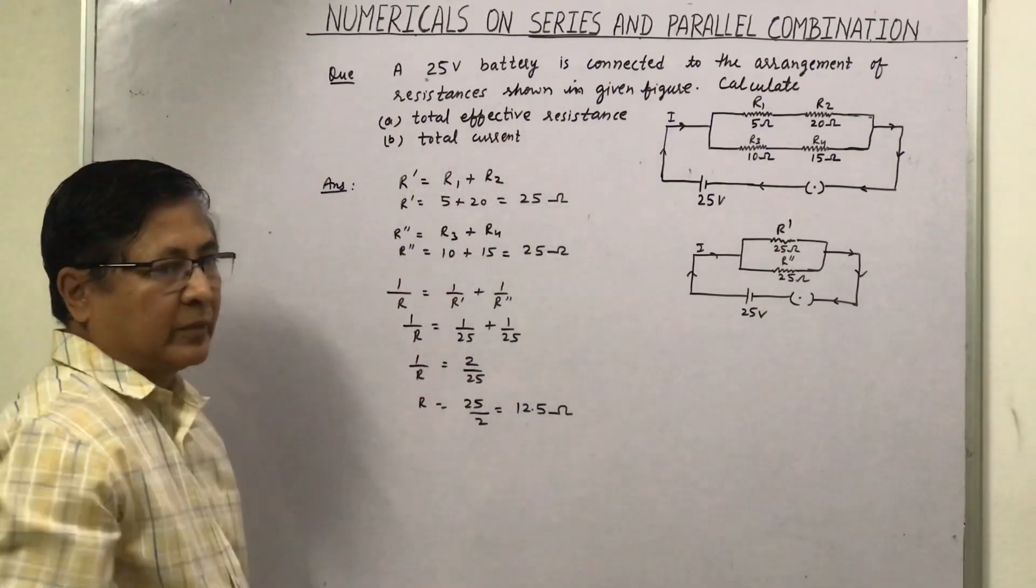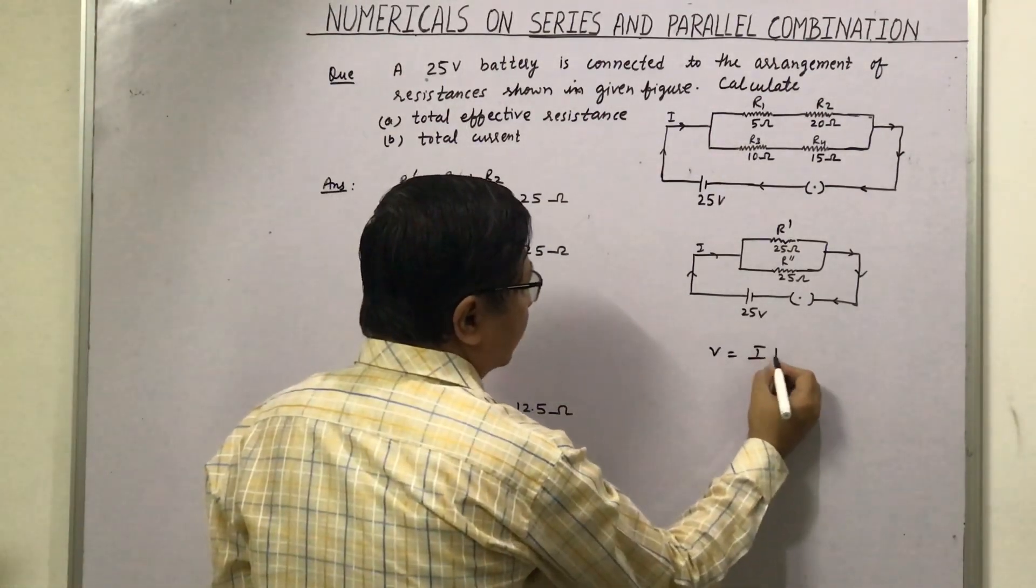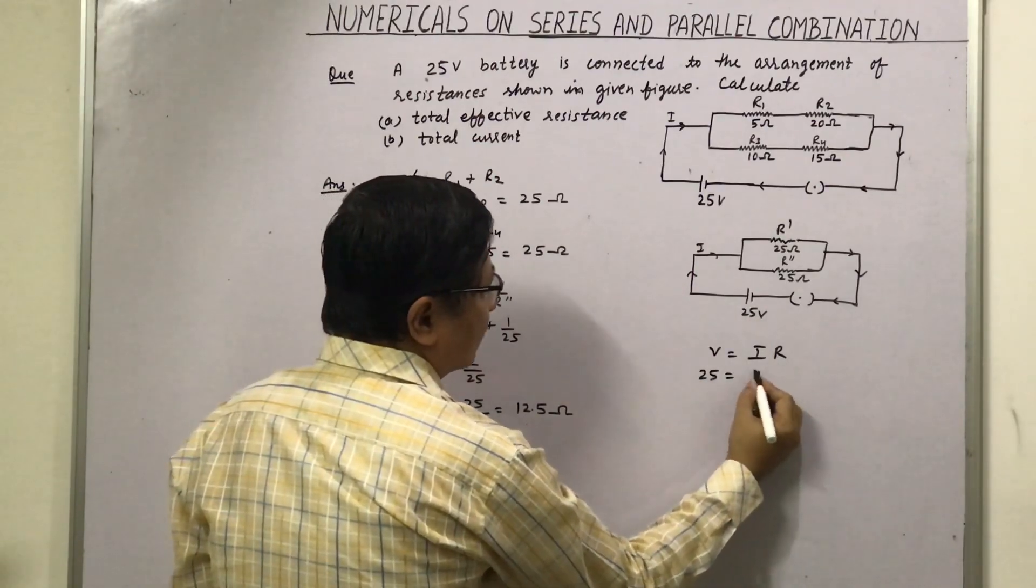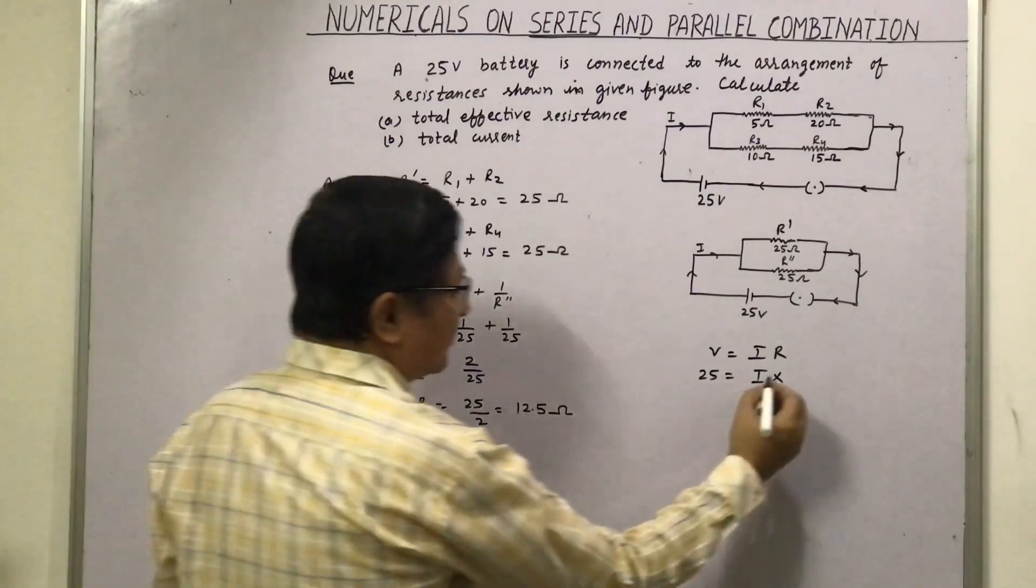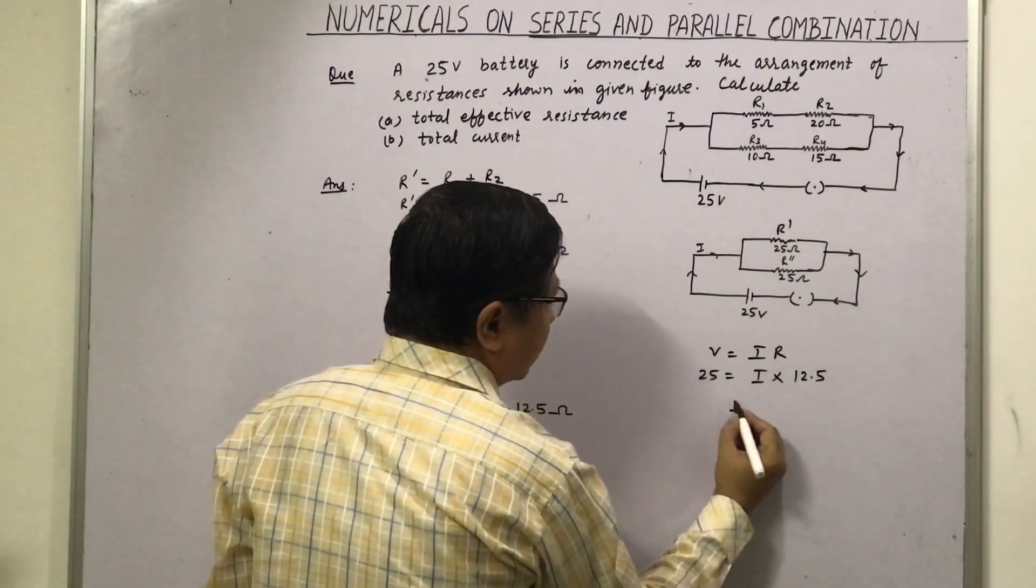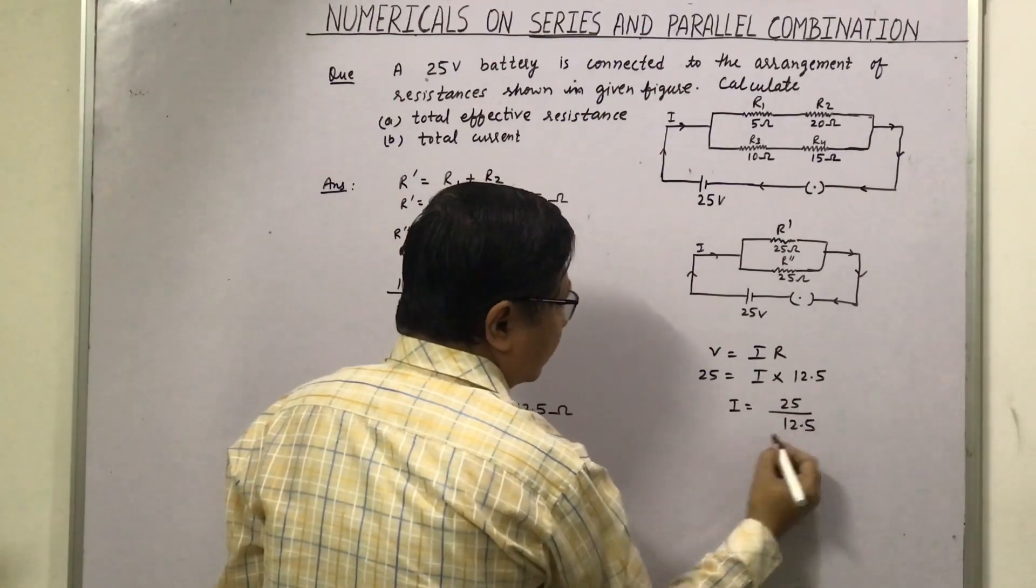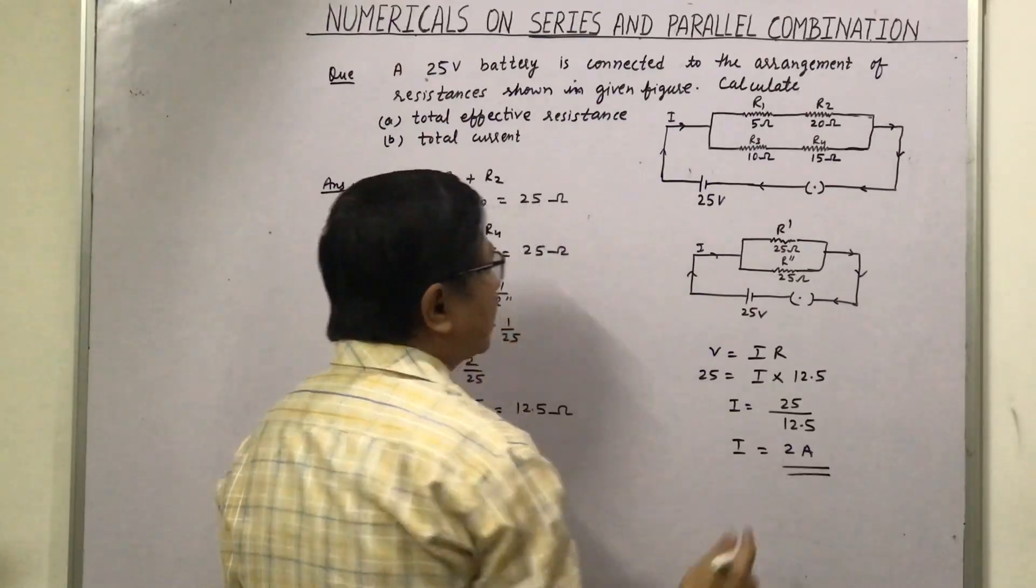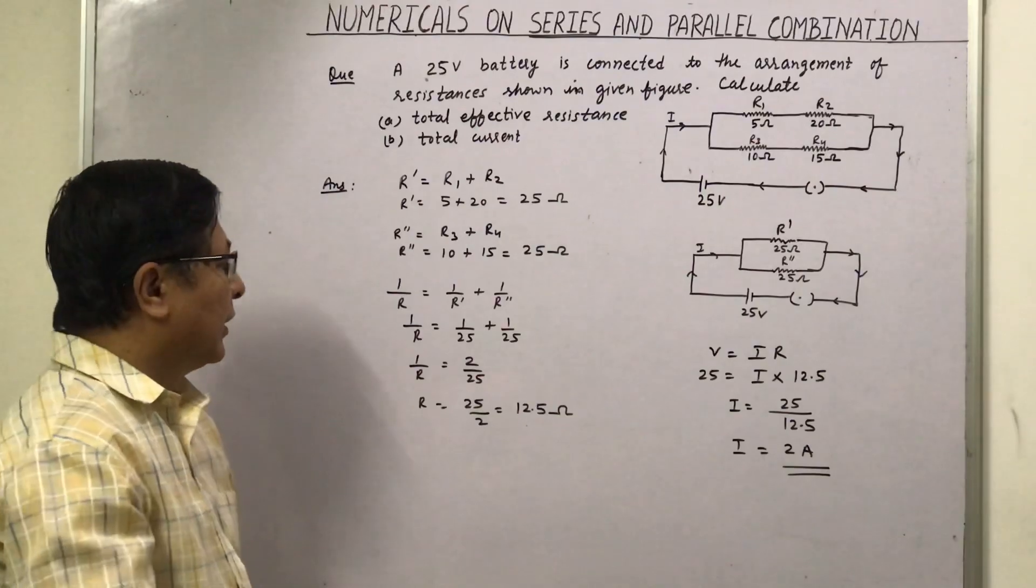Now we have to find total current by using Ohm's law, that is V is equal to IR. V is 25 volts. I we have to calculate, and R we have calculated, that is 12.5 ohm. So I will be equal to 25 upon 12.5, that is equal to 2. So the total current flowing in the circuit is 2 ampere.